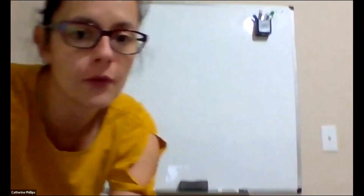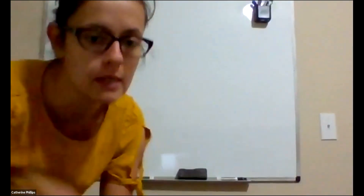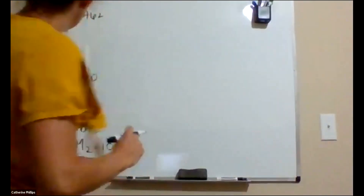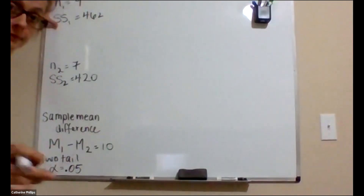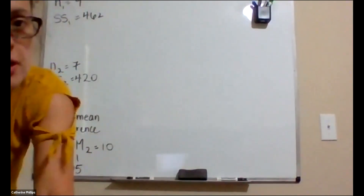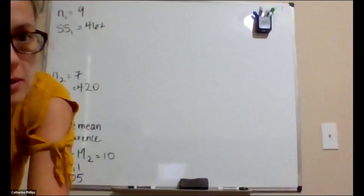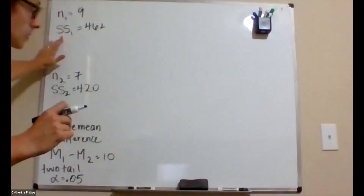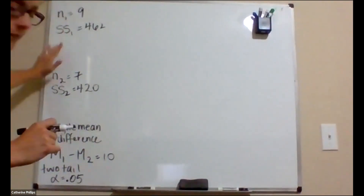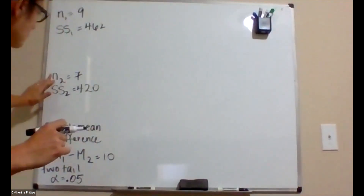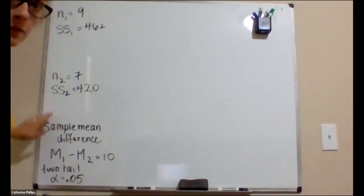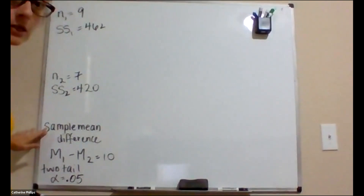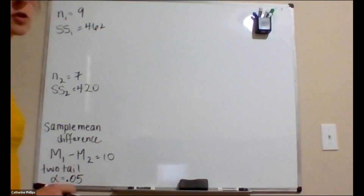So I've got my n of group one, the sum of squares of group one, the n of group two, the sum of squares of group two, my sample mean difference, and that directional information.